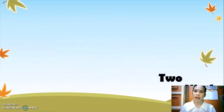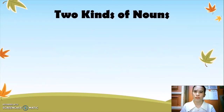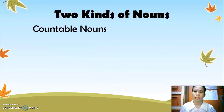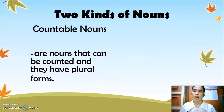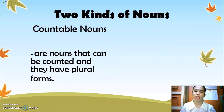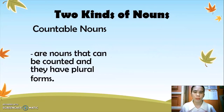Partitive nouns have two kinds of nouns. The countable nouns, which means they are nouns that can be counted and they have plural forms. For example, the tomato. Tomato is countable and has a plural form, which is tomatoes.